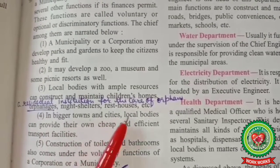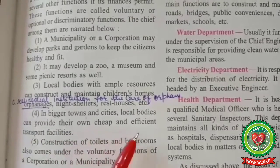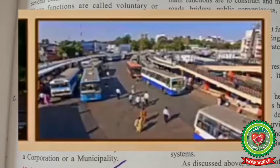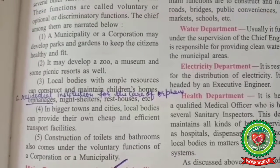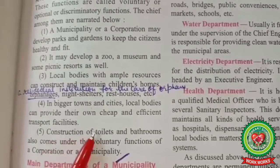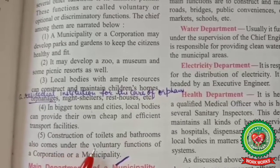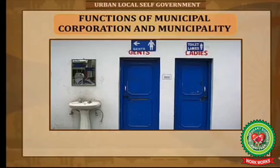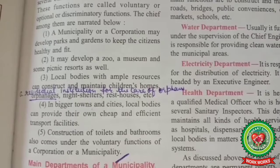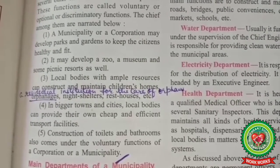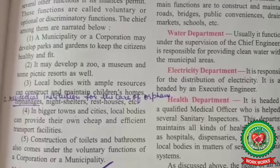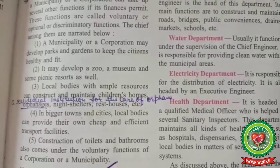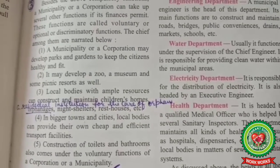In bigger towns and cities, local bodies can provide their own cheap and efficient transport facilities like buses. Construction of public toilets and bathrooms also comes under voluntary functions of a corporation or municipality. Steps are also taken for sanitation and cleanliness of the towns. In this video we have discussed till here. Now you will have to read this chapter, learn the basic terms, and kindly follow the SNAP homework. Thank you.